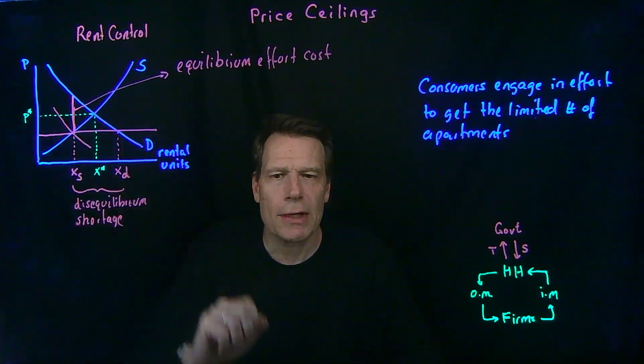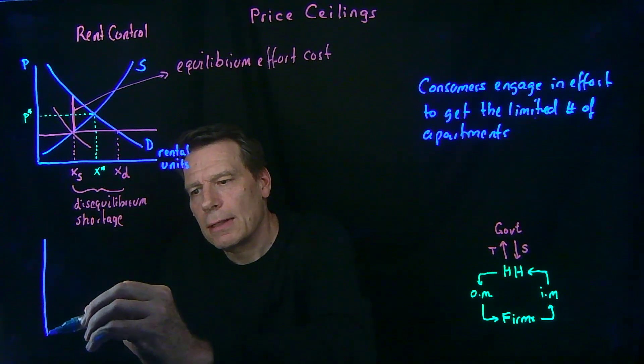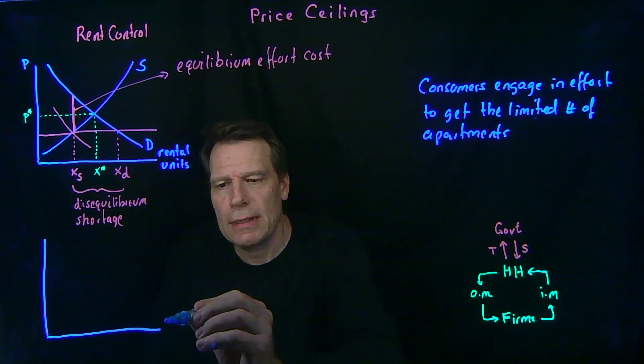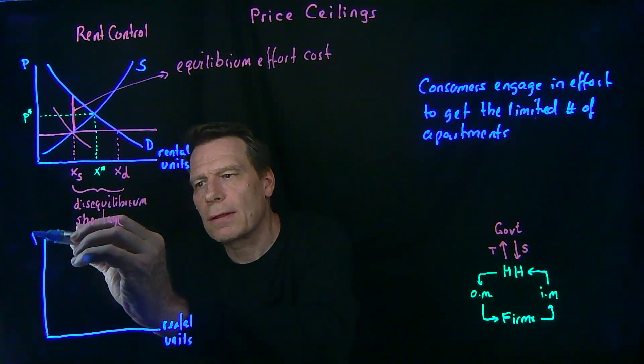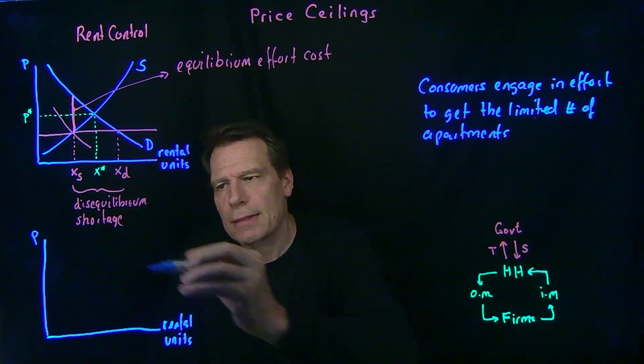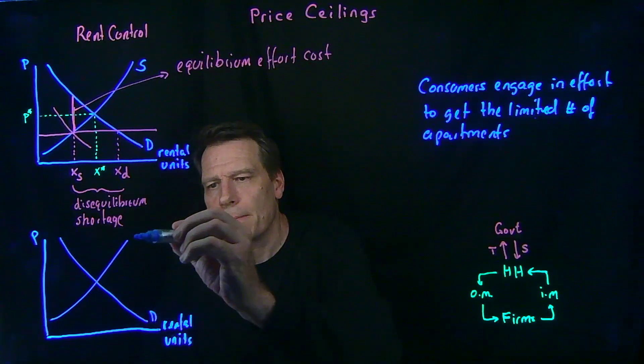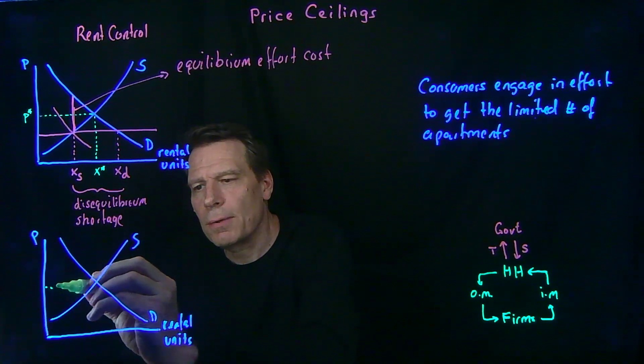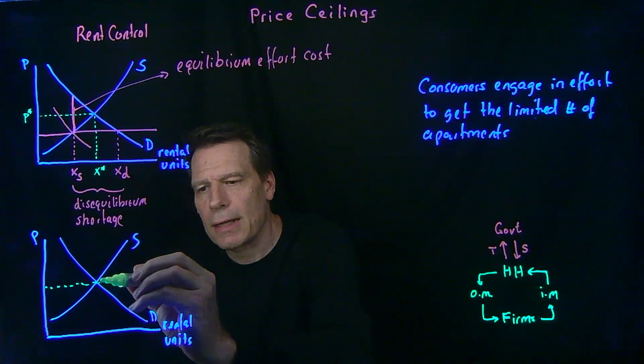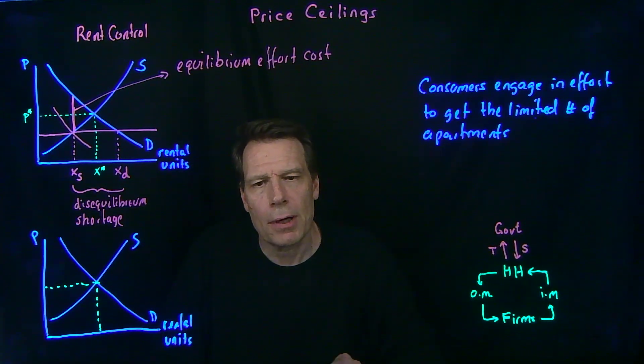So now we again have a very cluttered picture. So let's unclutter it in a lower picture and again only take what it is that we actually need. So we have rental units on this axis, the price for rental units, so the monthly rent on this axis, our original demand and supply, and the original unregulated market equilibrium, where this is the rental price and this is the number of units that are being transacted in the market.